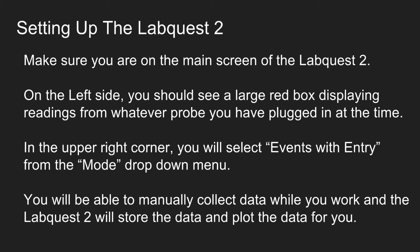So let's review. Make sure you're on the main screen of the LabQuest 2. Make sure your probes are properly plugged in and are registering on the main screen. In the upper right hand corner, from the mode drop-down box, select events with entry. Then on the events with entry screen make sure that you have typed your variable name and whatever unit you need for that variable. Finish by selecting OK.